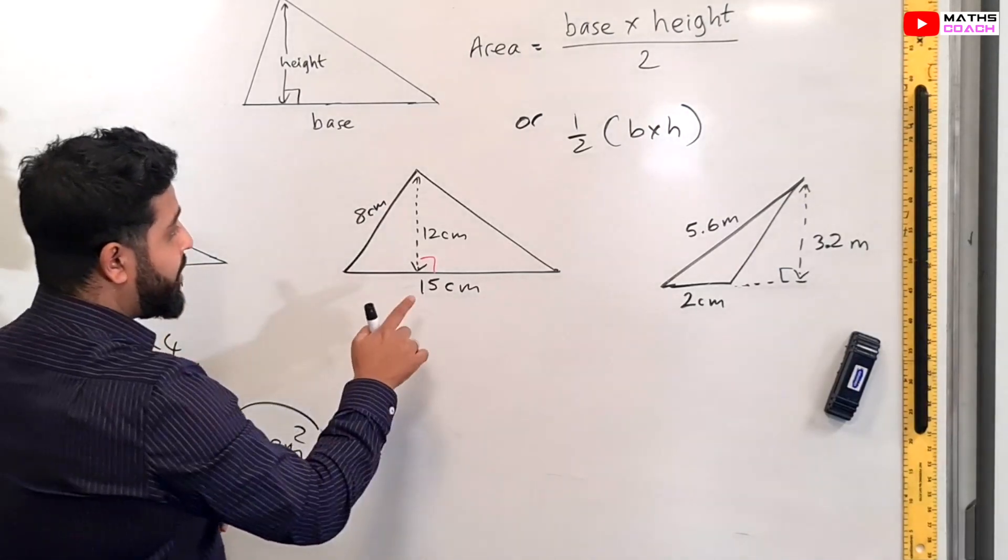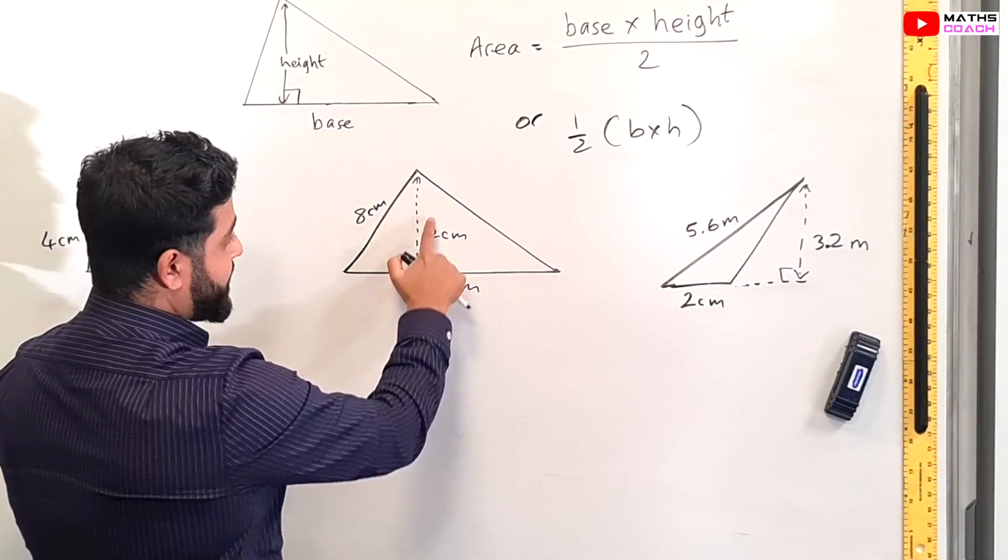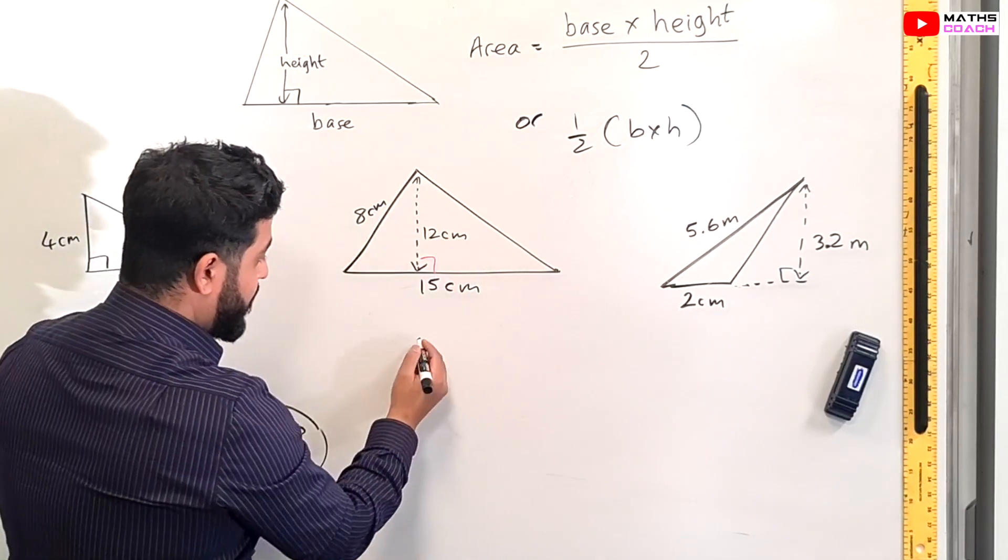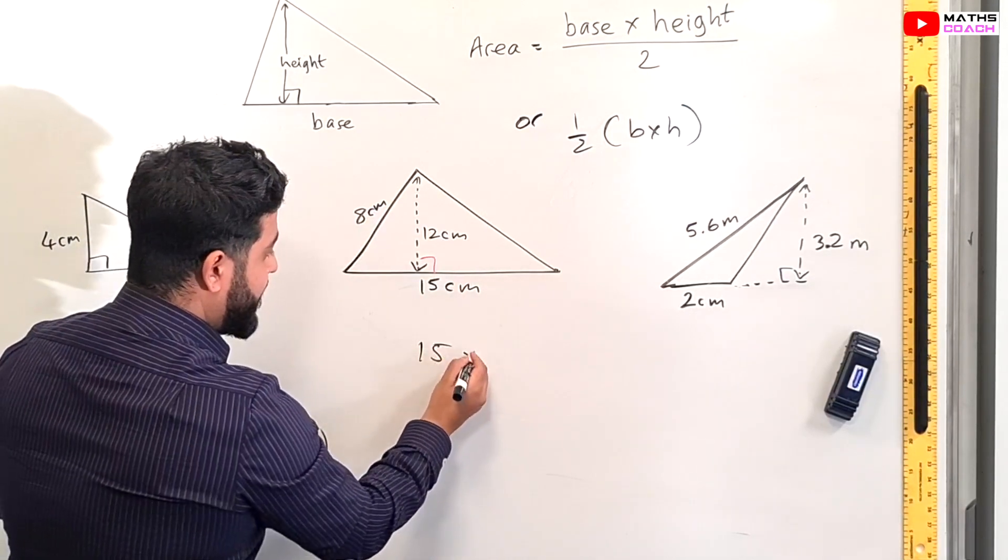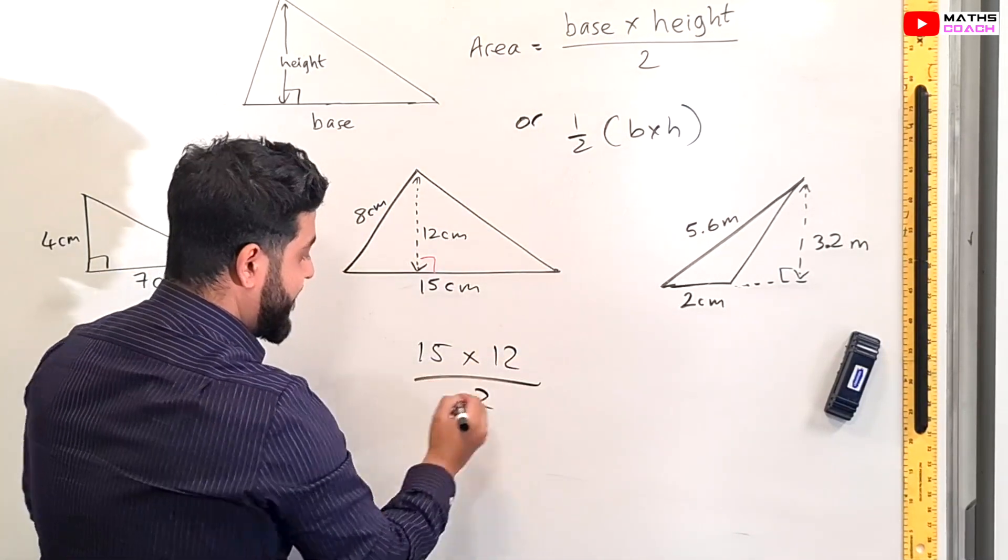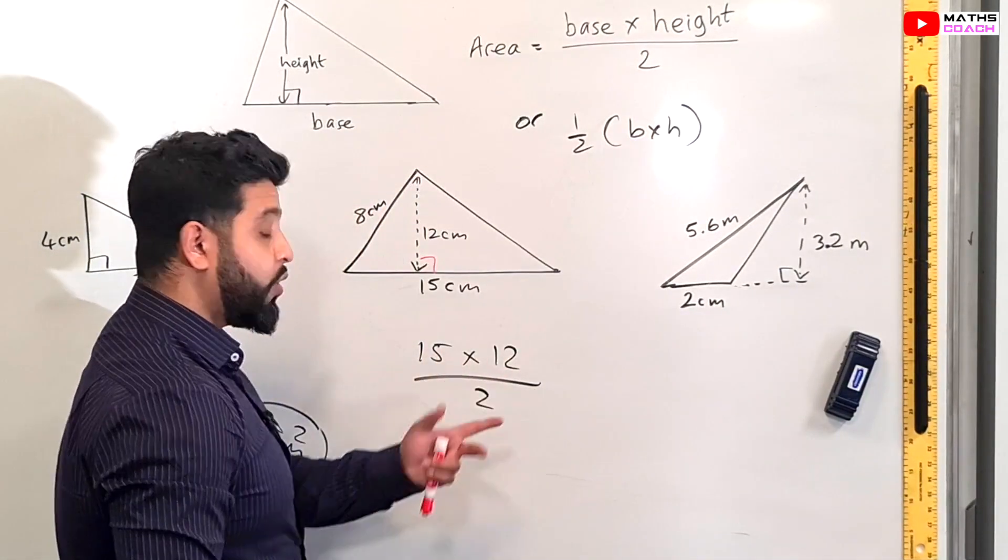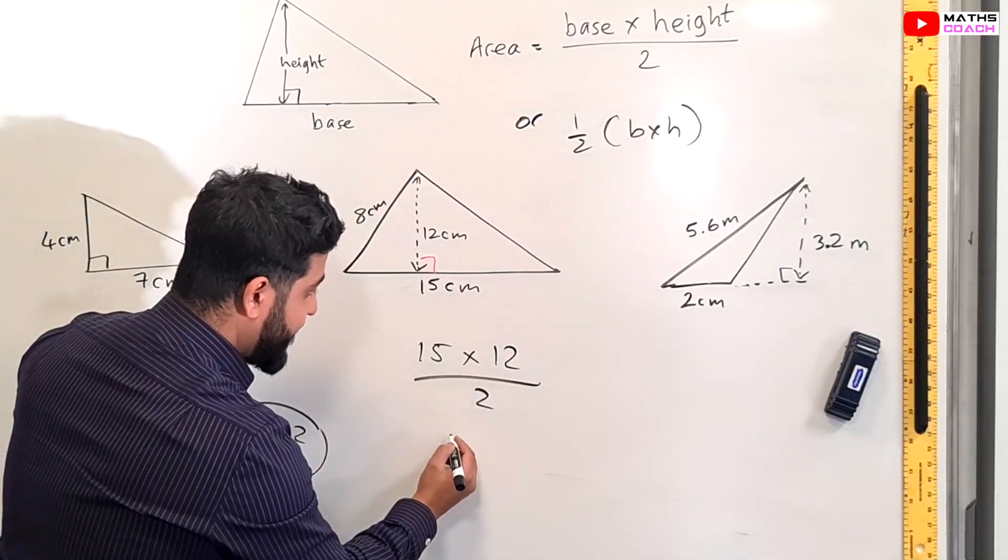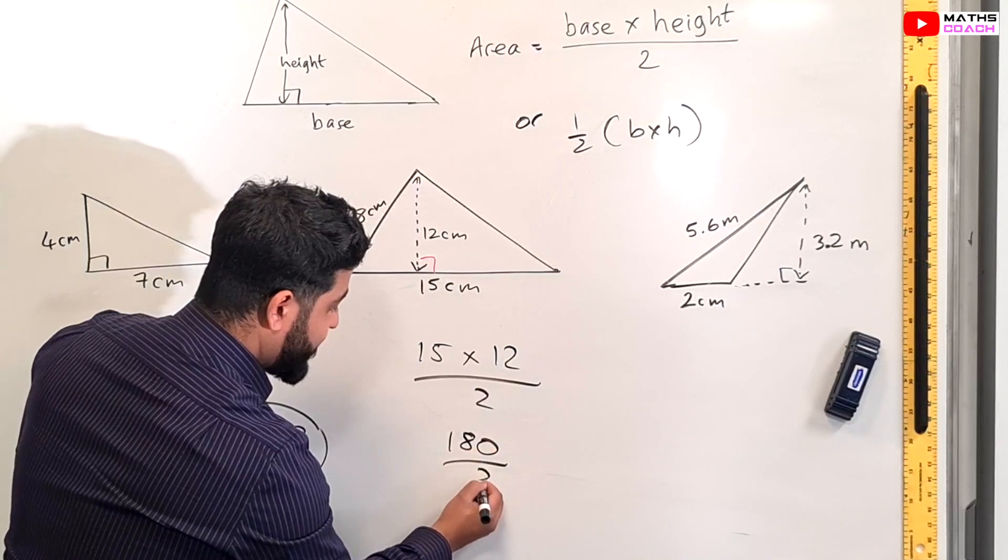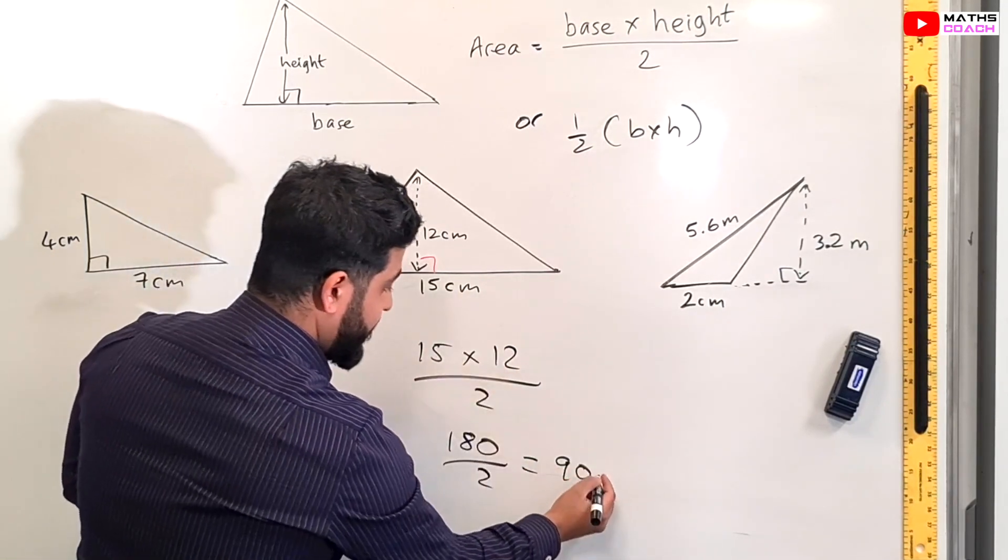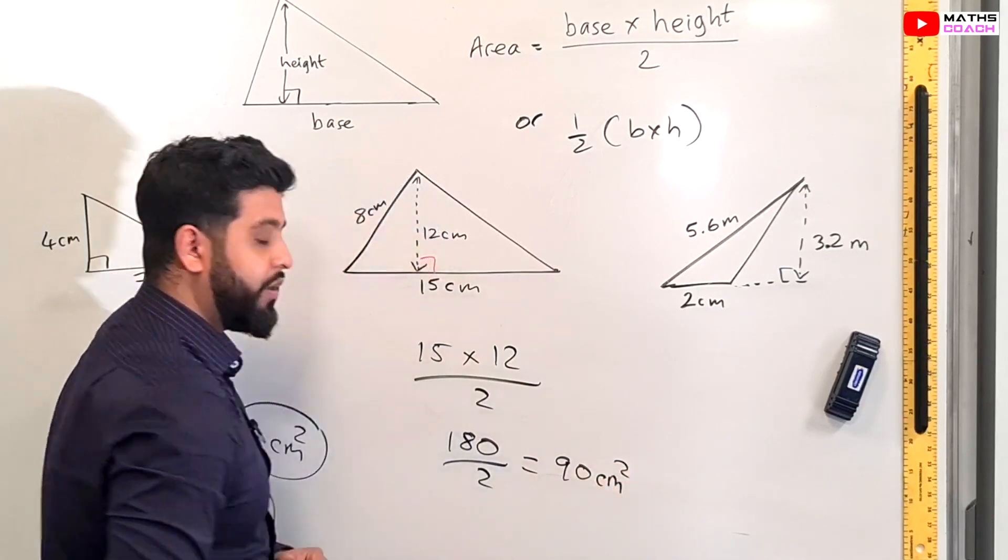This one here. Earlier on I did say to you that 12 centimeters is the height of this triangle and not 8 centimeters. So base is 15 times the height which is 12 and then if we divide that by 2. So 15 times 12 you could probably use your calculator to do this. So you can do that go right ahead. That's 180 and 180 divided by 2 which is 90 and the units are centimeters squared once again.